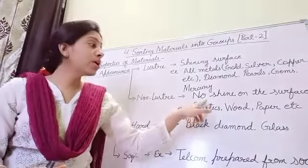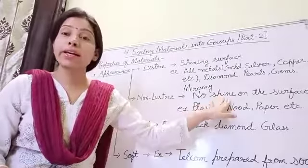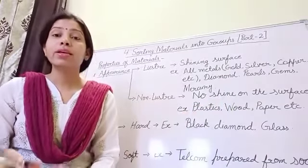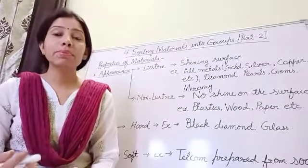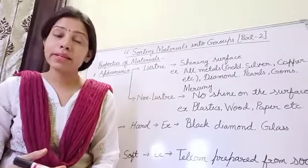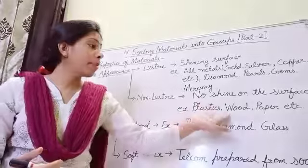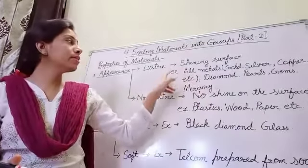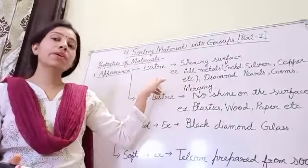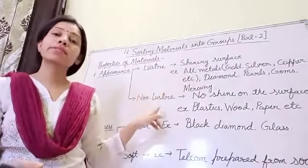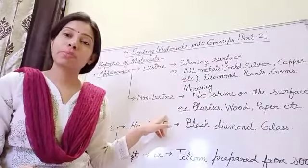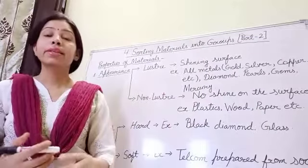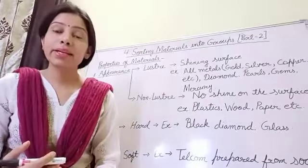The second type is non-lustrous materials. These do not have shine on their surface. A few examples are plastic, paper, and wood. So that covers luster and non-luster materials.